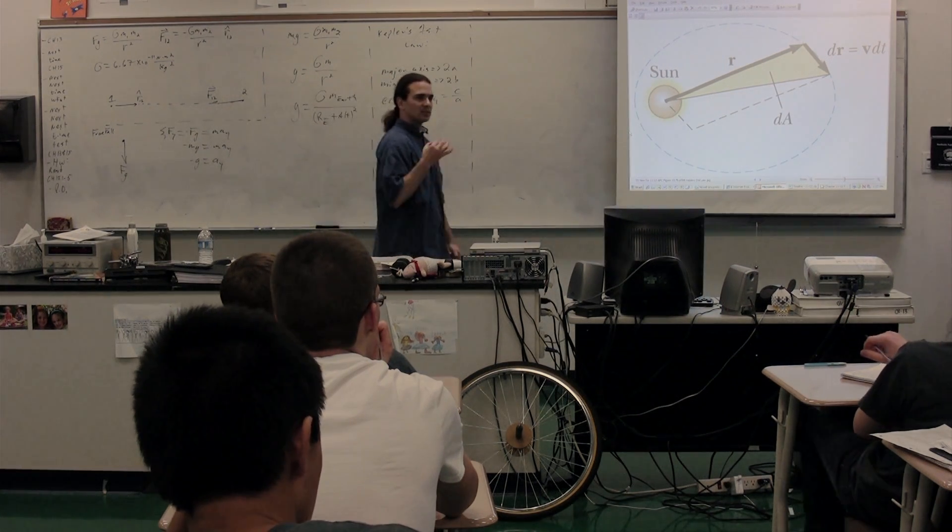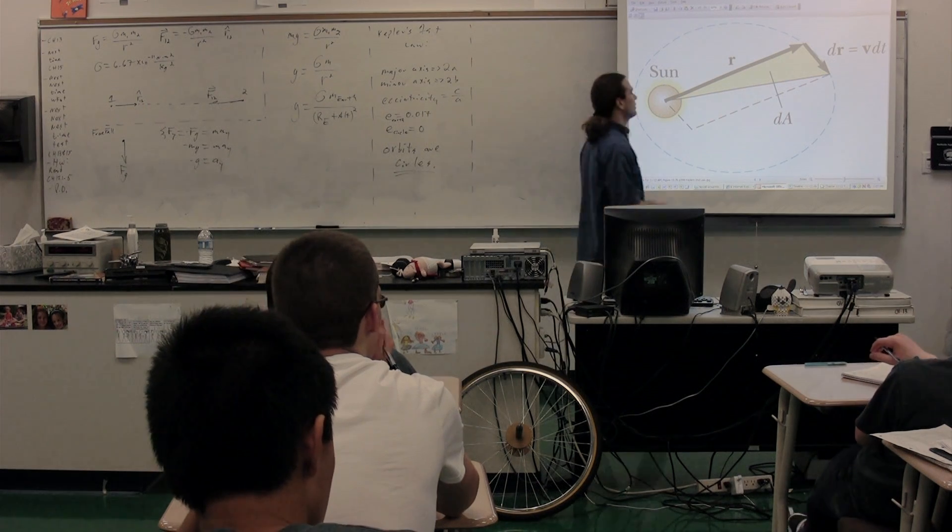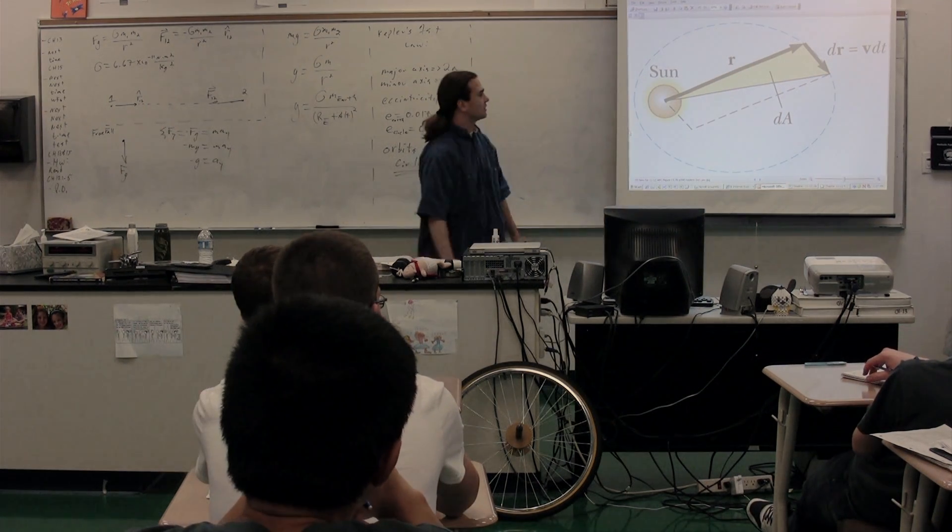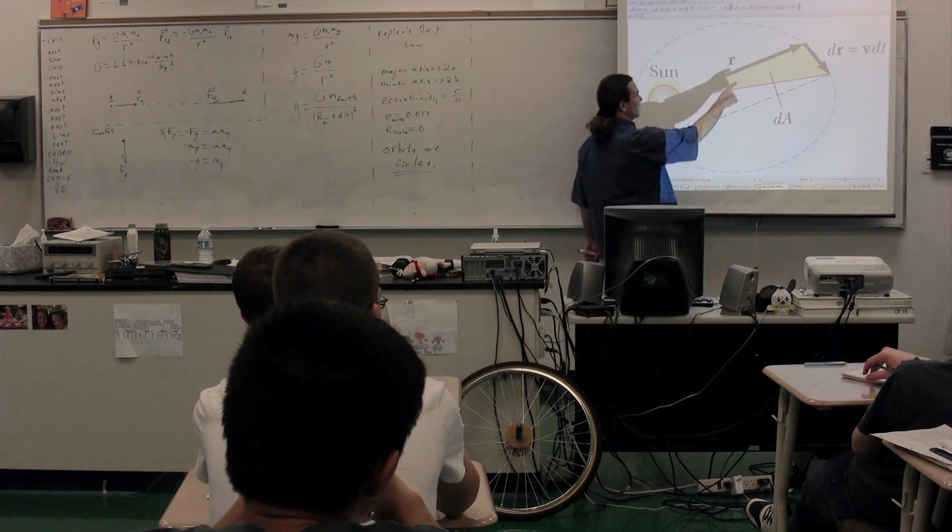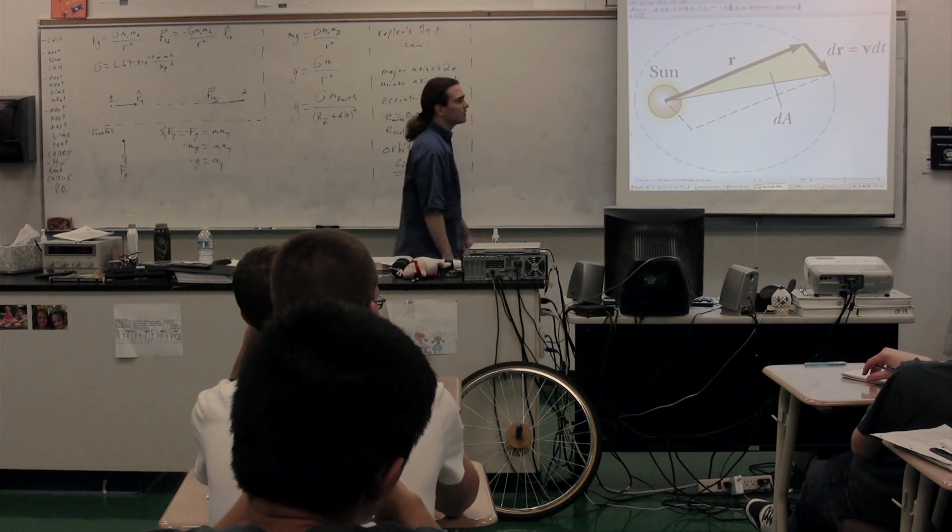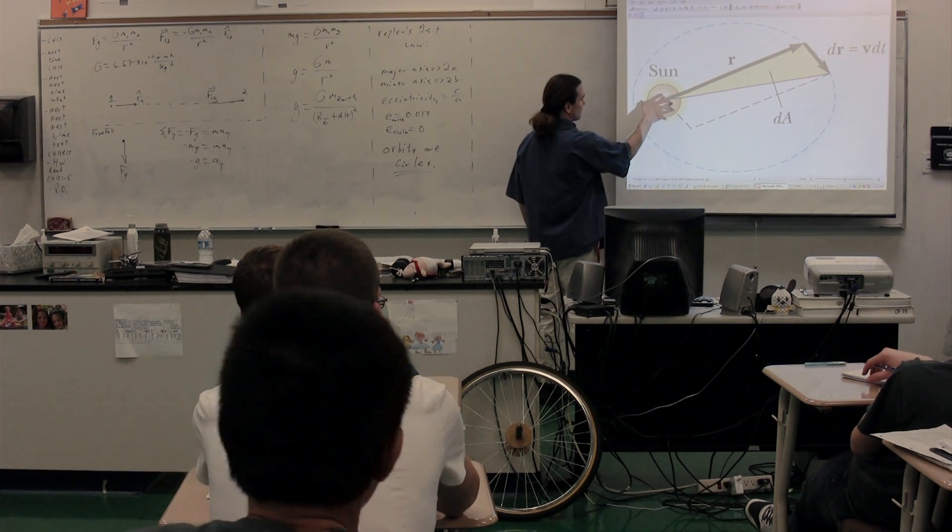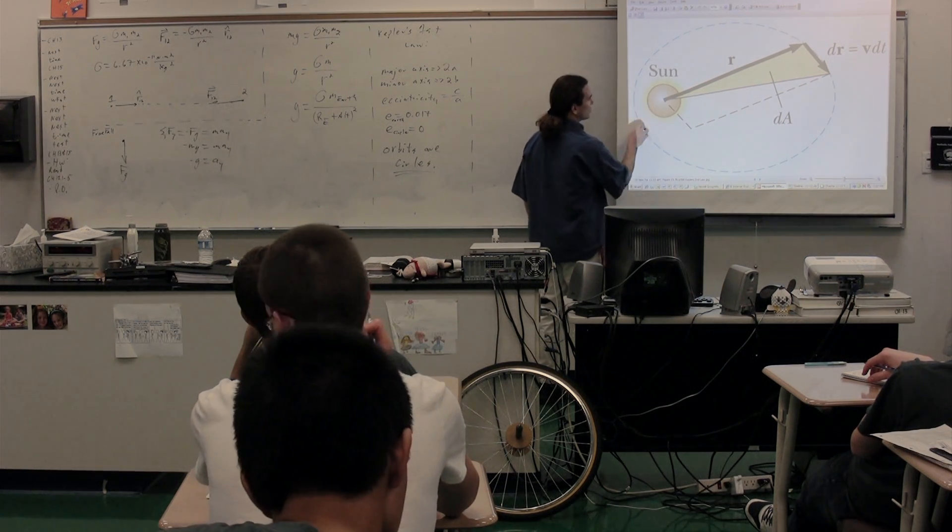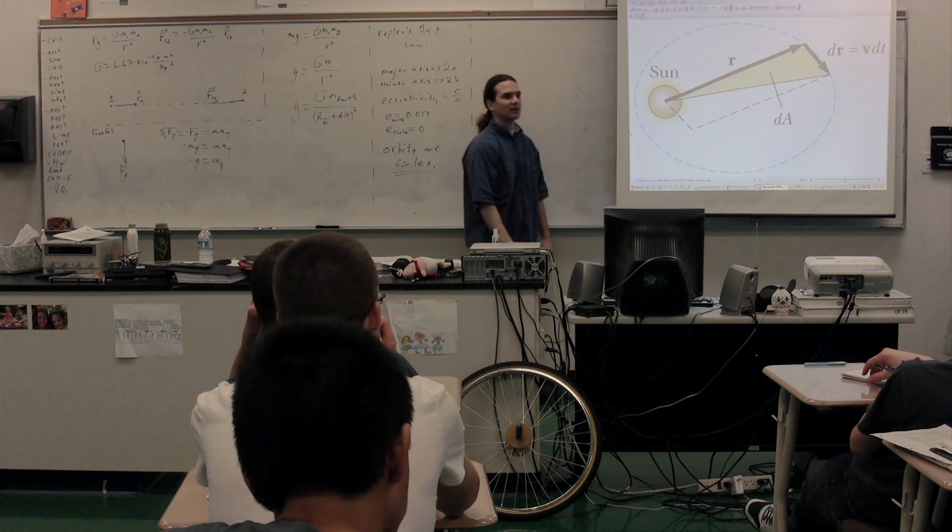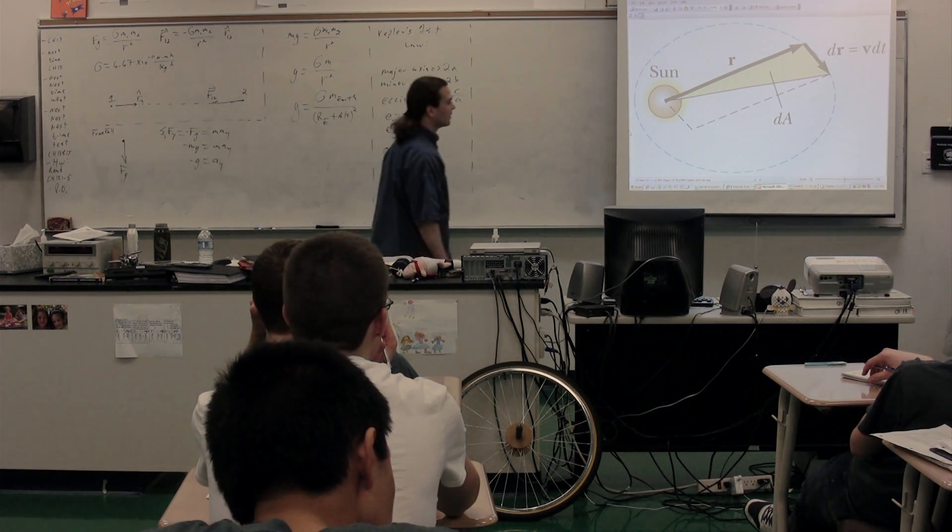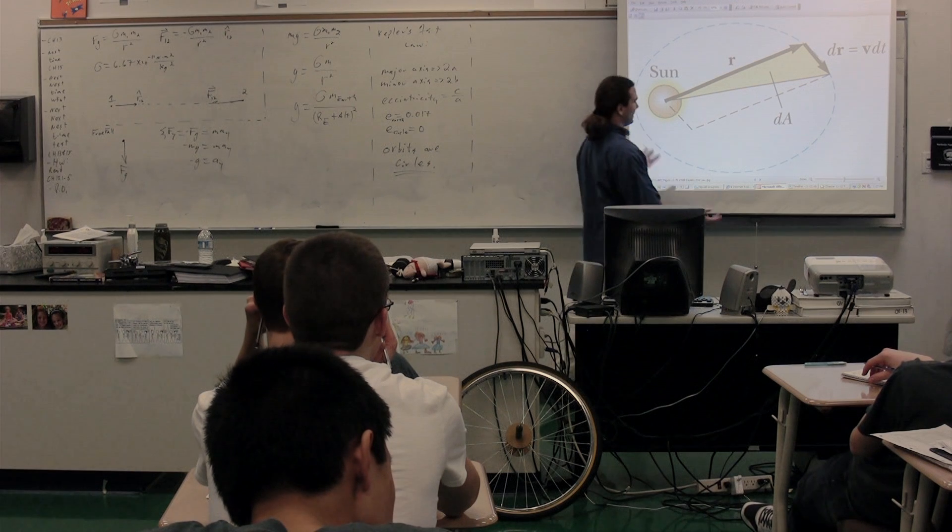And as long as the time is the same, the area of that triangle is going to be the same, regardless of where the planet is on its orbit. So if we were to draw one down here, it would look more like this for the same amount of time so that we would get a much larger area that would match the area that's there. And that is Kepler's second law. It's the basic idea.